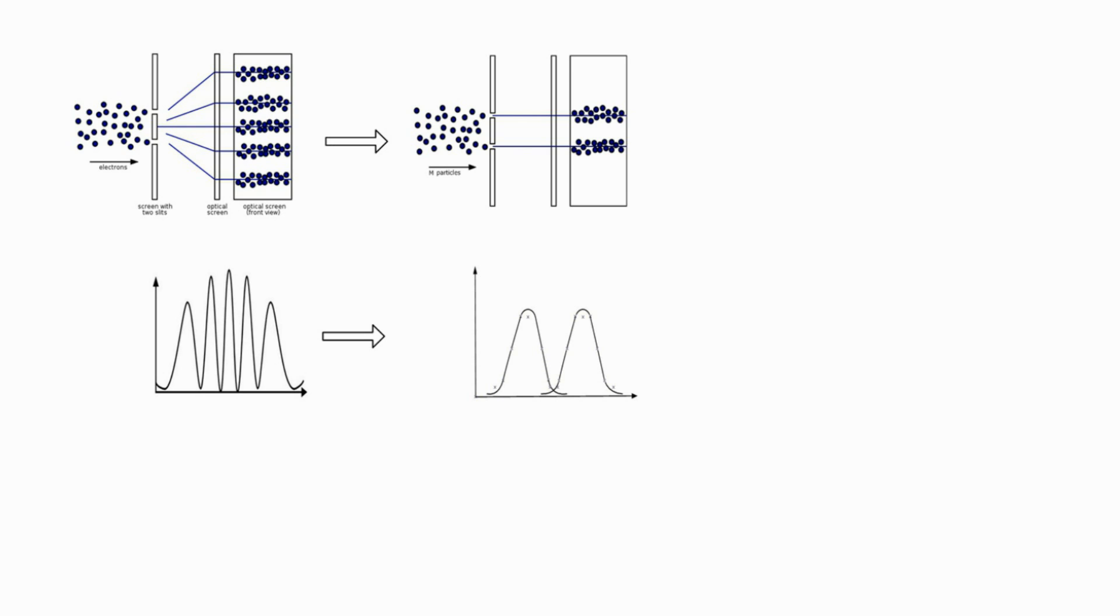Double slit experiments demonstrate that matter can display characteristics of both wave and particle. It also displays the probabilistic nature of quantum mechanics.